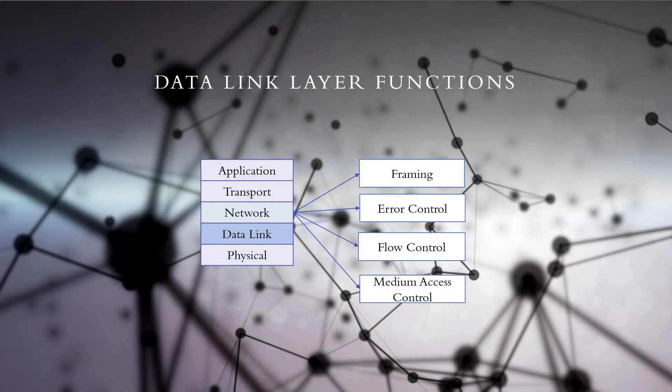In this video we are going to discuss the functions of the data link layer in the TCP/IP model. The data link layer is the second layer of the TCP/IP model, also referred to as Layer 2. As its name suggests, it handles the communication of data over a single link. It has four main functions in data communication: framing, error control, flow control, and medium access control.